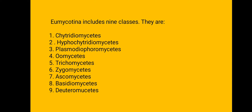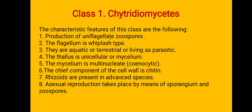Eumycotina is generally divided into nine classes: Chytridiomycetes, Hypochytridiomycetes, Plasmodiophoromycetes, Oomycetes, Trichomycetes, Zygomycetes, Ascomycetes, Basidiomycetes, and Deuteromycetes. Class 1 is Chytridiomycetes. Their character is the production of uniflagellate zoospores. The flagellum functions in locomotion. The flagellum is uniflagellate — a single hair-like structure is present.